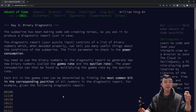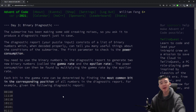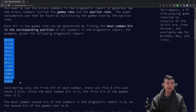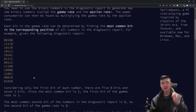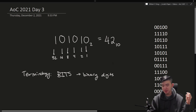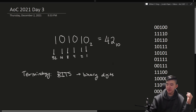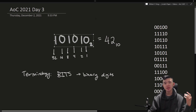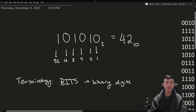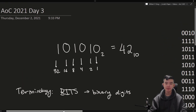For Part 1, our submarine has been making some odd creaking noises, so you ask it to produce a diagnostic report just in case. Our diagnostic report consists of a bunch of lines containing binary strings. And just as a quick refresher, binary is a system of writing numbers in base 2. It's different from our usual way of writing numbers in base 10. For example, this number 101010 in base 2 is 42 in base 10, because it is 32 plus 8 plus 2. So every digit in this binary number stands for a certain value, which is a power of 2.